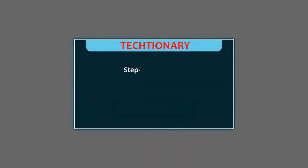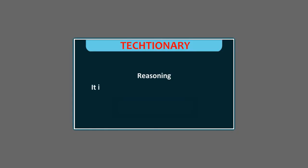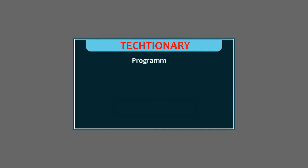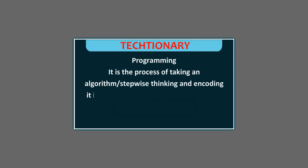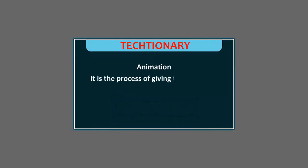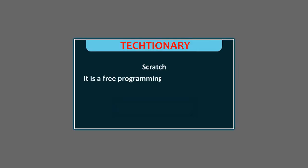Key terms: Stepwise thinking helps in converting complicated tasks into simple steps. Reasoning is stepwise thinking with a goal or purpose in mind. A Program is step-by-step instructions that direct the computer to do a specific task. Programming is the process of encoding an algorithm into a programming language so a computer can execute it and produce the desired output. Animation is the process of giving the illusion of movement to drawings. Scratch is a free programming software to create games, animated stories and interactive art.